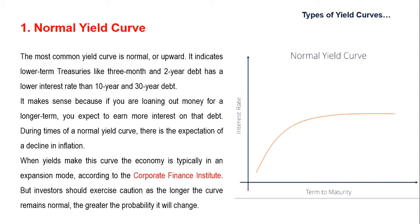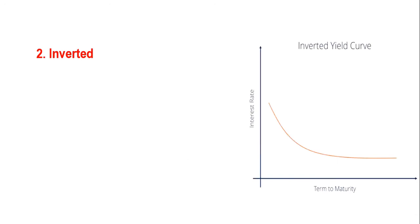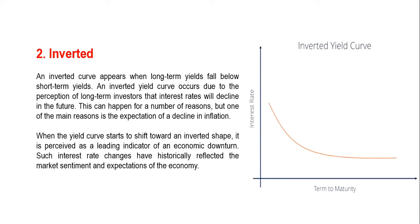Let's move on to the inverted yield curve. An inverted curve appears when long-term yields fall below short-term yields. This occurs due to the perception of long-term investors that interest rates will decline in the future, one main reason being the expectation of a decline in inflation. When the yield curve starts to shift towards an inverted shape, it is perceived as a leading indicator of an economic downturn, reflecting market sentiment and expectations.